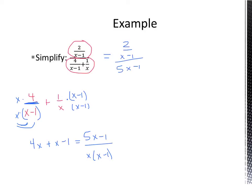This is 2 over x minus 1 over, and if you wanted to skip this step and go ahead and write it as multiplication, you could. This is the top fraction times the reciprocal of the bottom fraction, and cross out anything that crosses out. Our answer then is 2x over 5x minus 1.